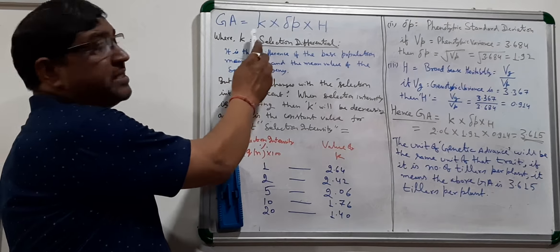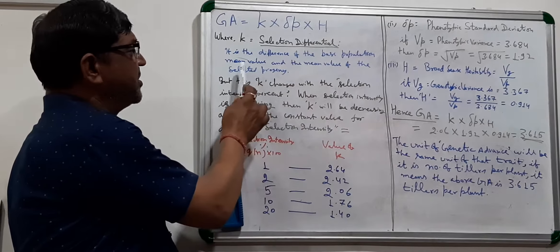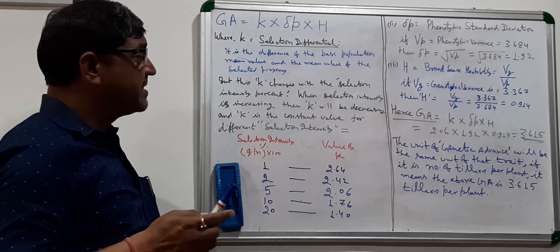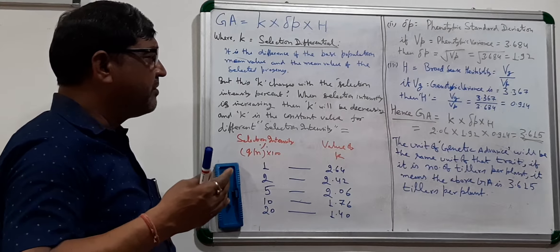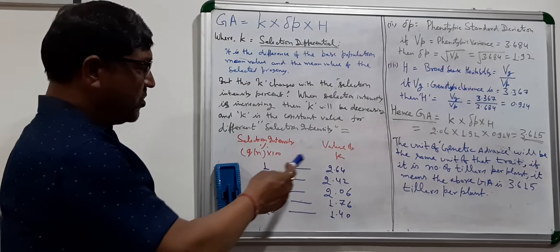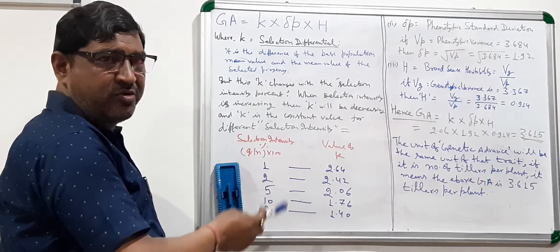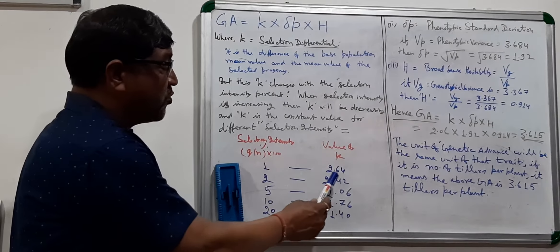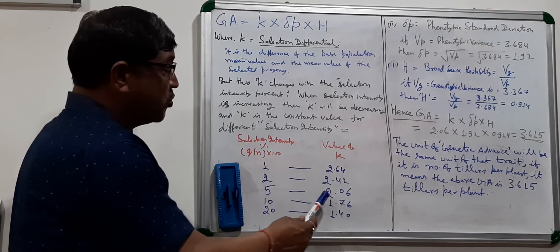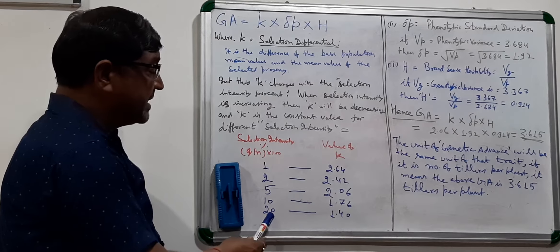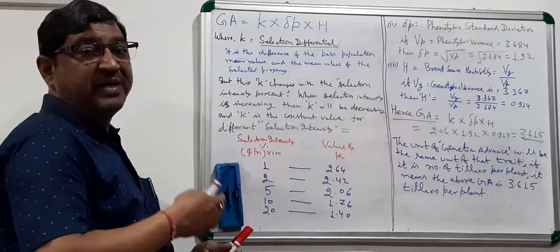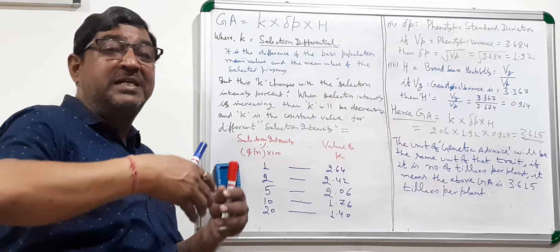Here, k is the selection differential — it is the difference of the base population mean value and the mean value of the selected progeny. But this k changes with selection intensity percent: when selection intensity is increasing, k will be decreasing. k is the constant value for different selection intensities. It has been calculated in tabular form: if 1 percent selection intensity, k = 2.64; if 2 percent, k = 2.42; if 5 percent, k = 2.06; if 10 percent, k = 1.76; if 20 percent, k = 1.40.